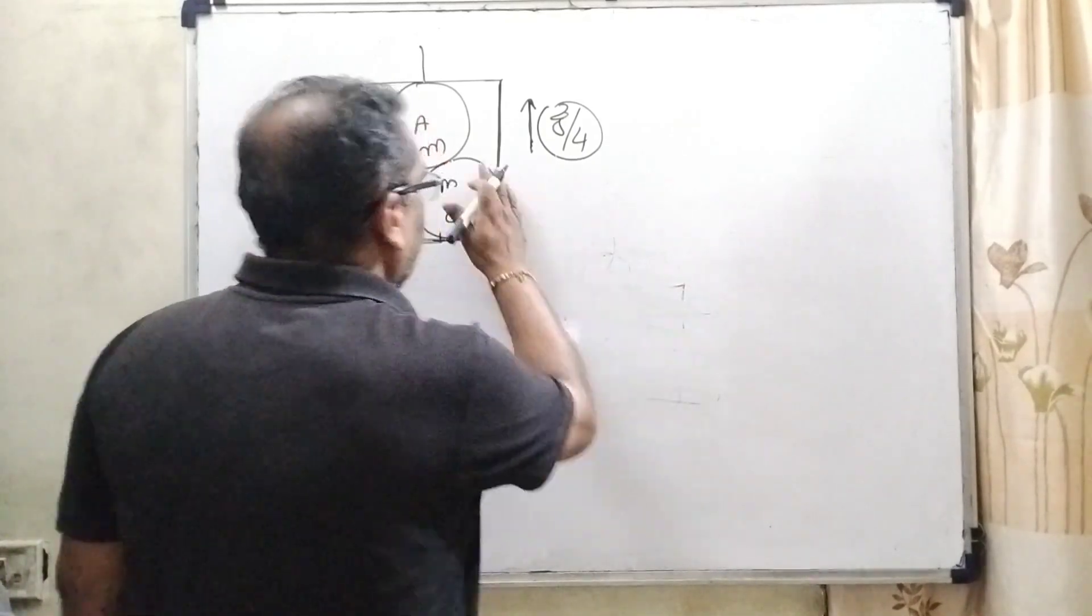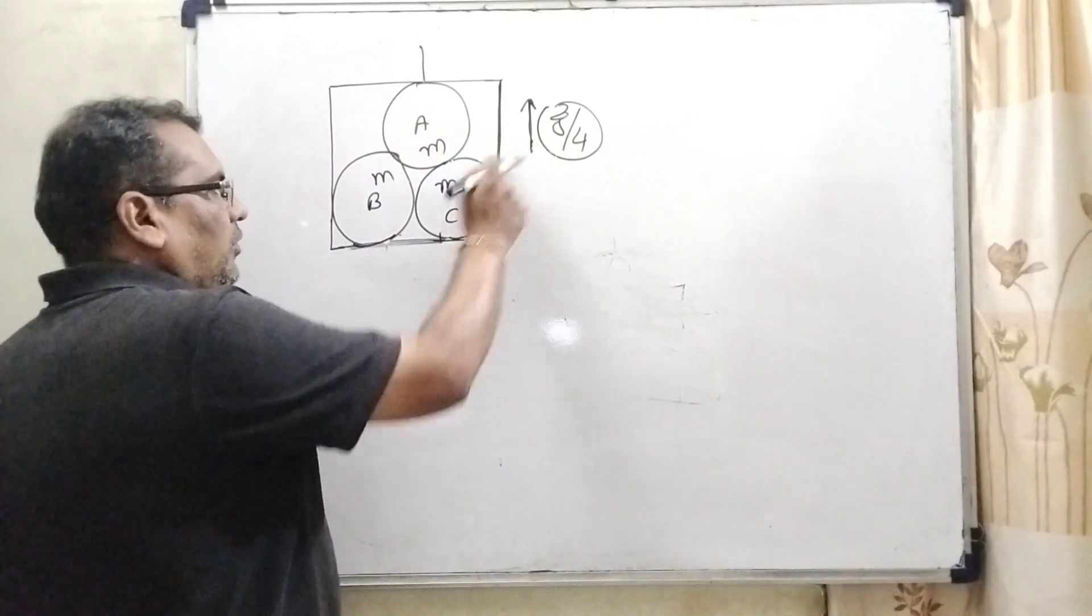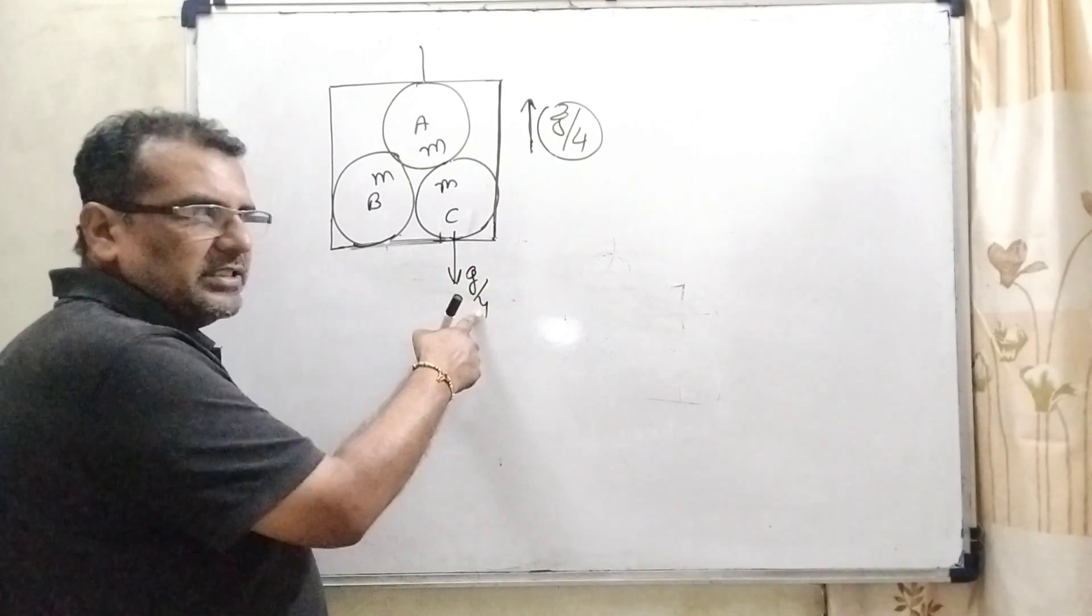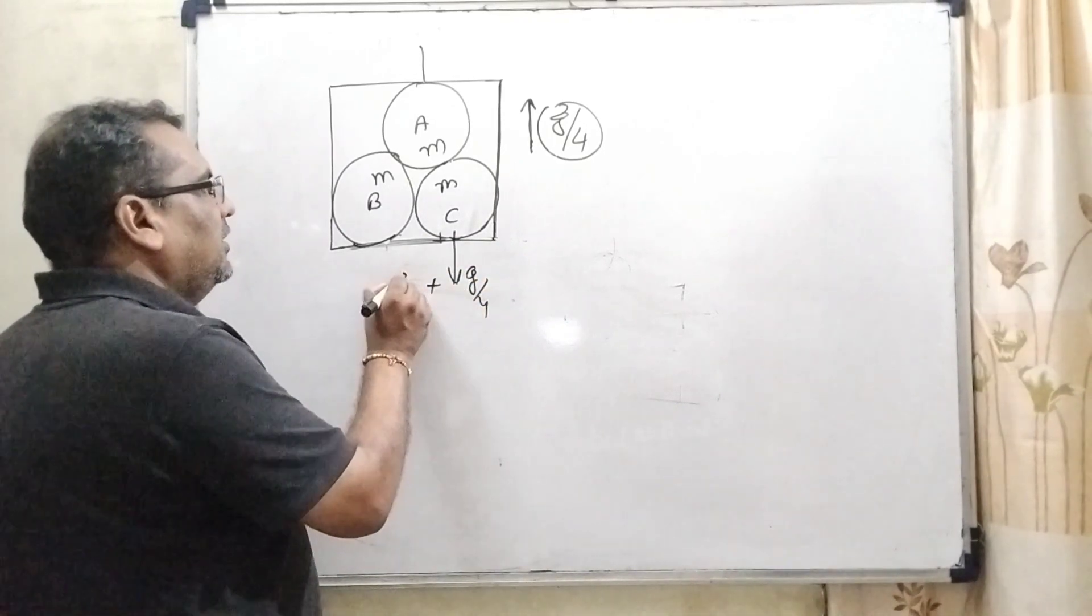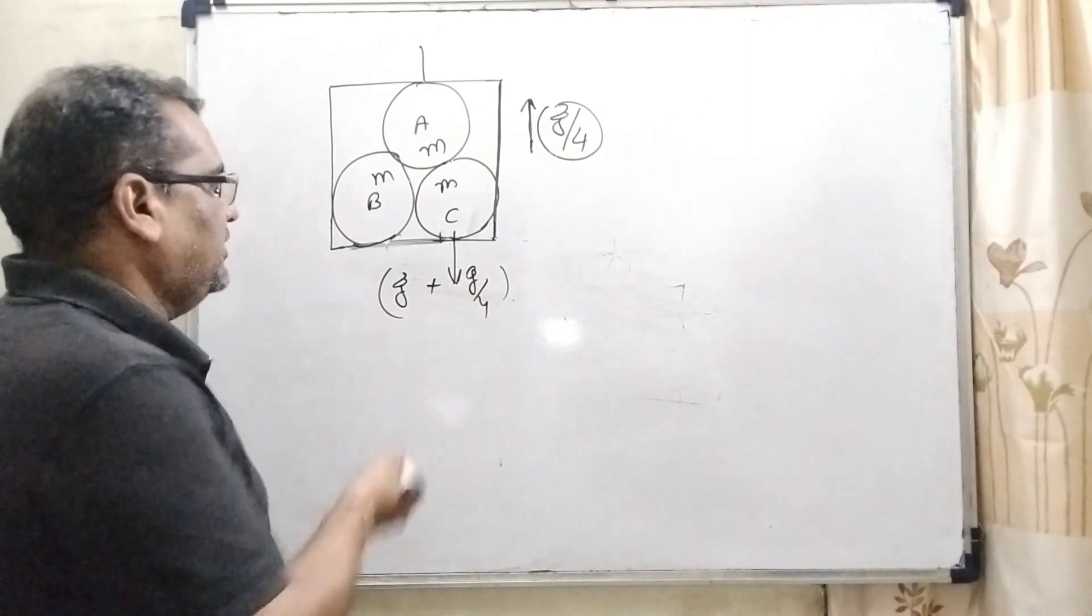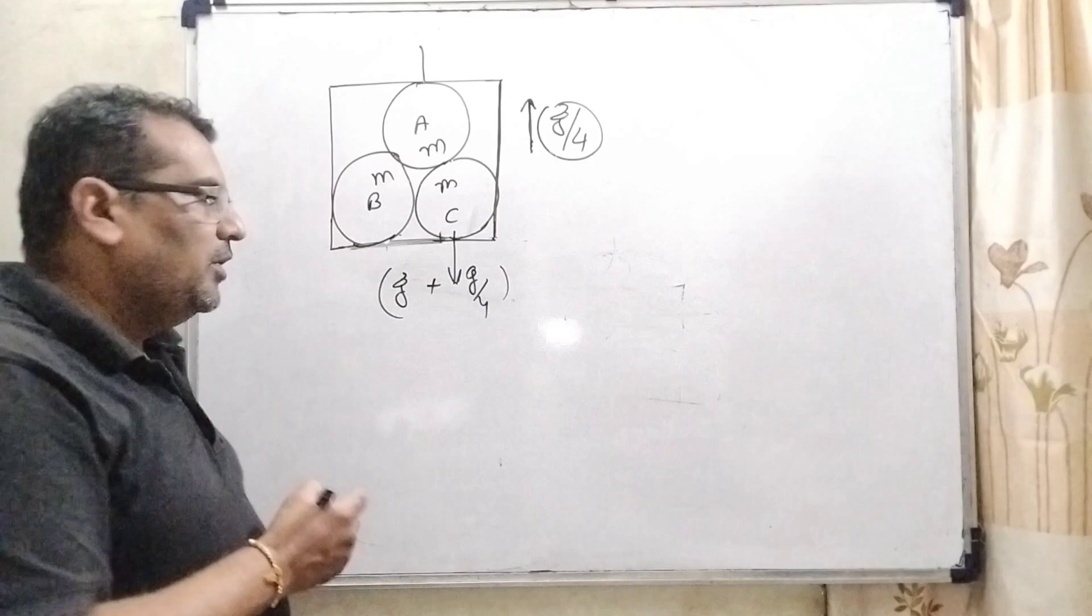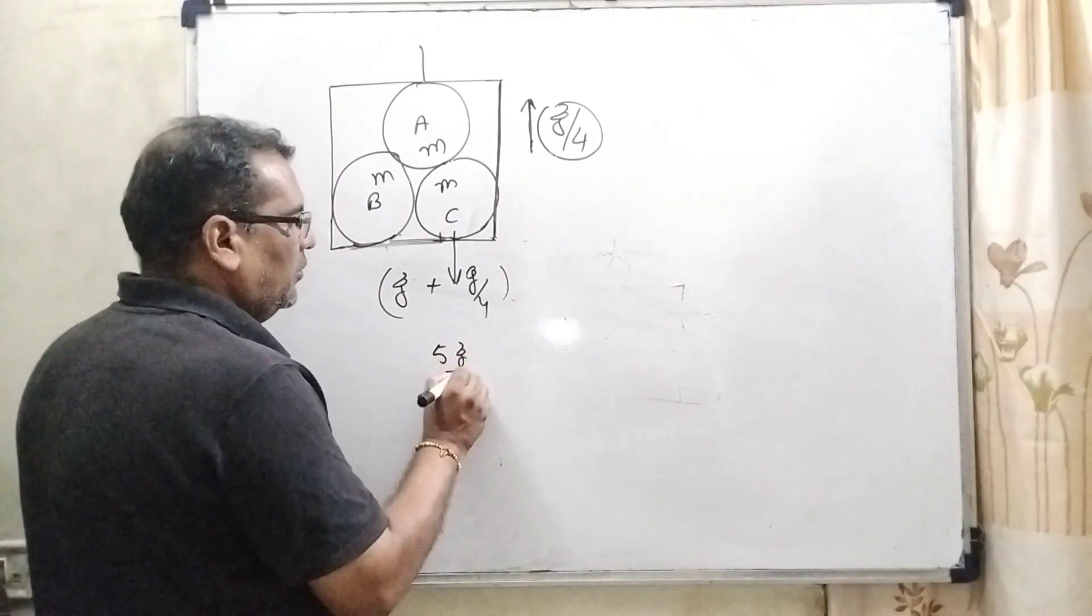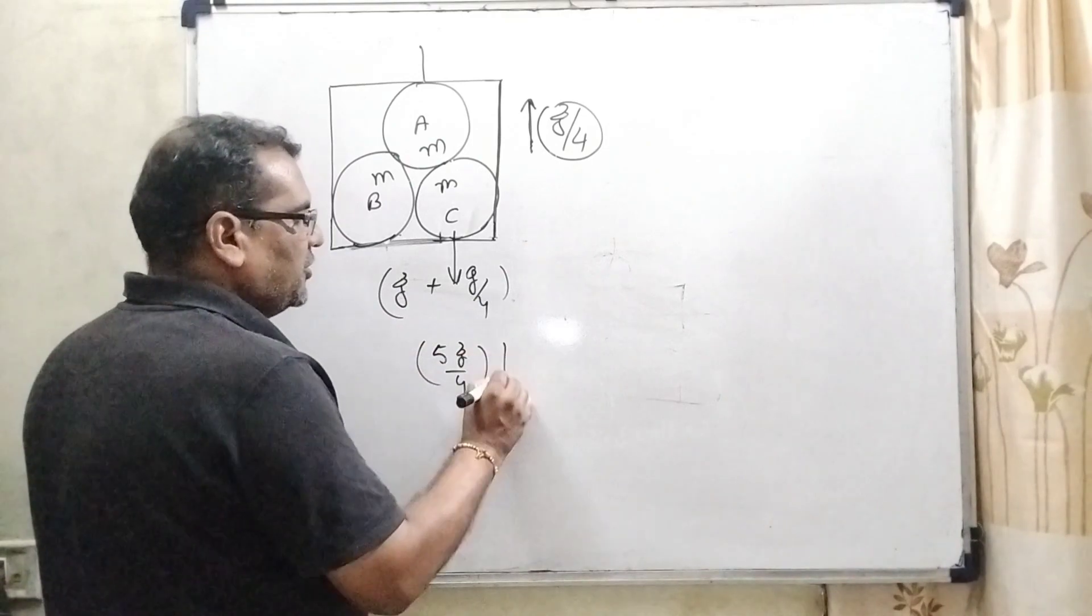So, same concept applying here. This g by 4 is acting, that is called pseudo acceleration, and here g is acceleration due to gravity in downward direction. So, net acceleration is 5g by 4 in downward direction.